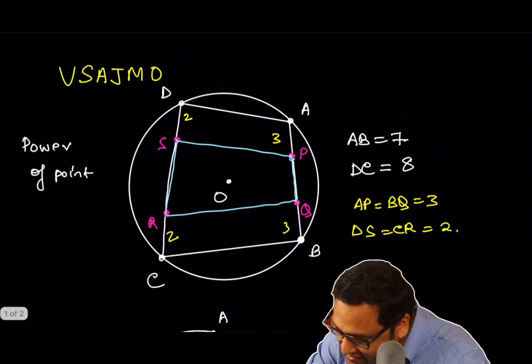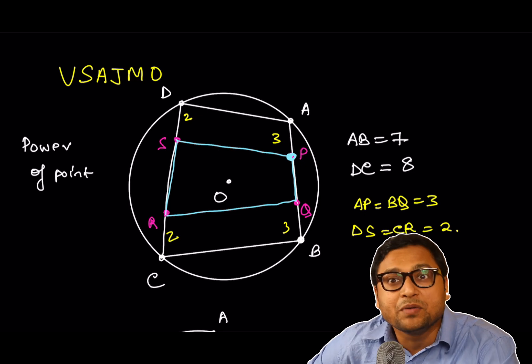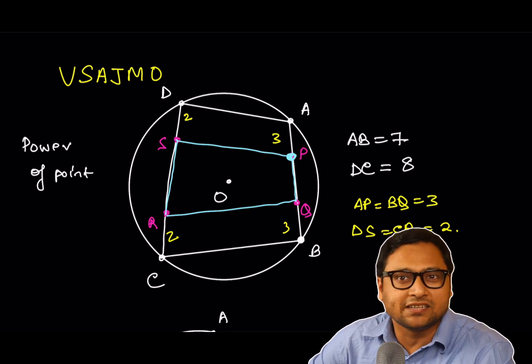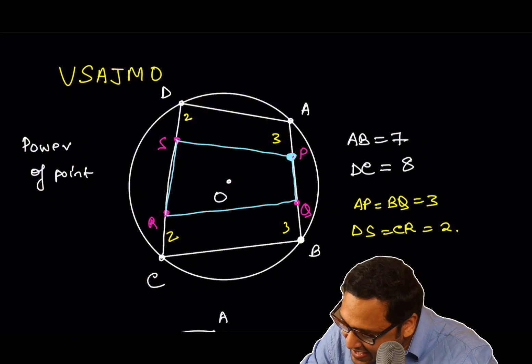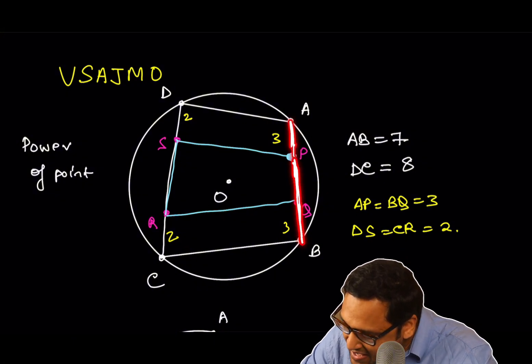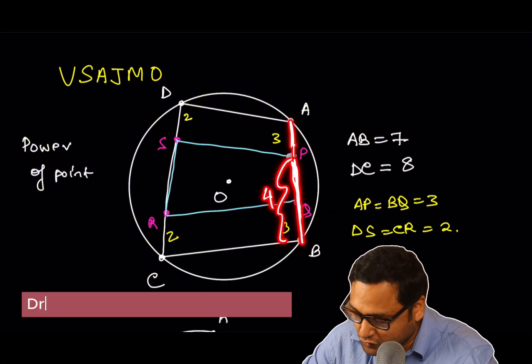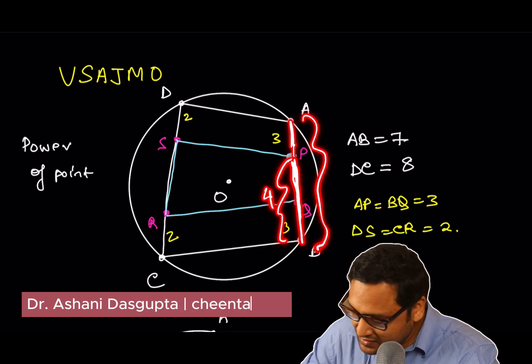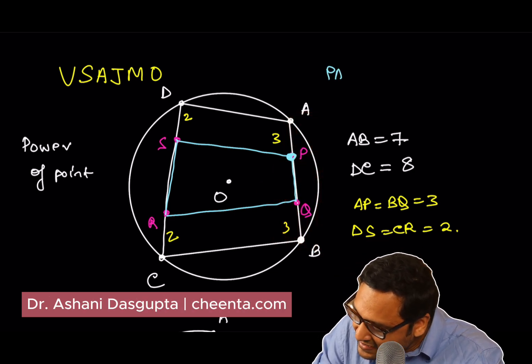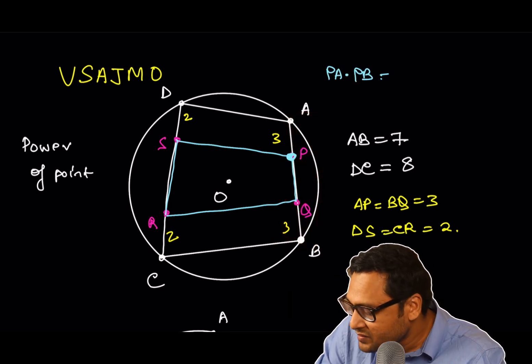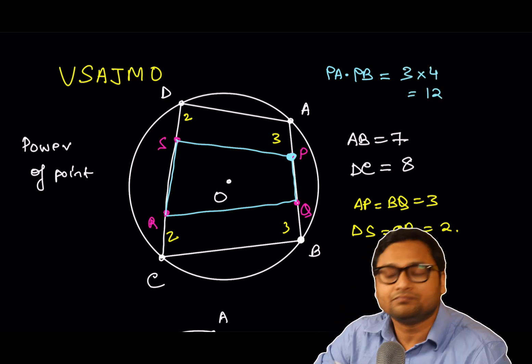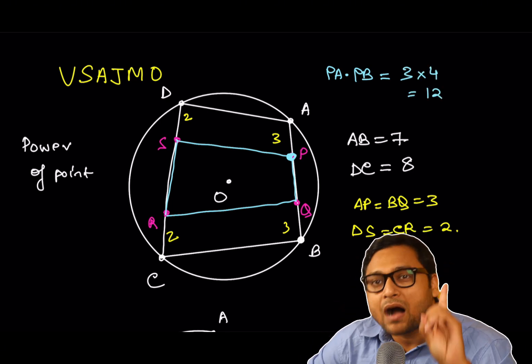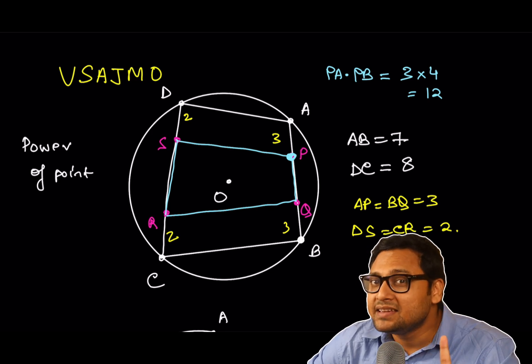Let's look at the point P and compute the power of the point P. Notice that this is 3. PA is 3. And PB is 4. Because the total thing is 7. So PA times PB is 3 times 4, which is 12. So the power of the point P is 12.